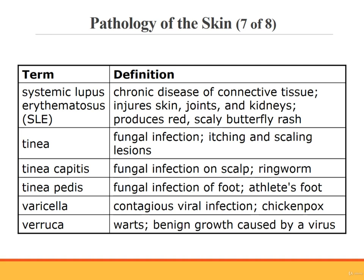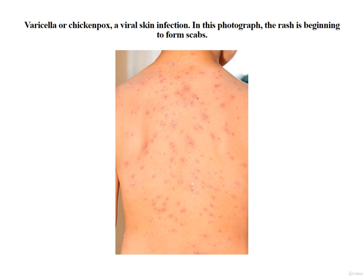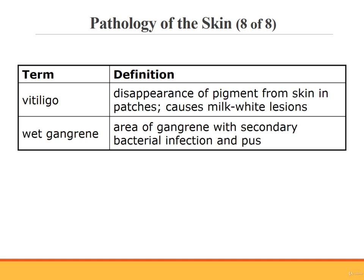Systemic lupus erythematosus is a chronic disease of the connective tissue that injures the skin, joints, kidneys, nervous system, and mucous membranes. It is an autoimmune condition, which means the body's own immune system attacks the normal body tissue. It can produce a characteristic red scaly butterfly rash across the nose and cheeks. Tinea is a fungal skin disease that results in itching and scaling lesions. Tinea capitis is a fungal infection of the scalp, commonly called ringworm. Tinea pedis is a fungal infection of the foot, commonly known as athlete's foot. Varicella is a contagious viral infection called chicken pox. Verruca is the medical term for a wart — it's a benign growth caused by a virus.